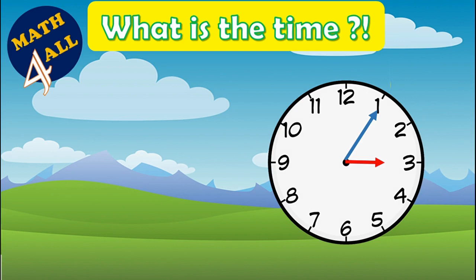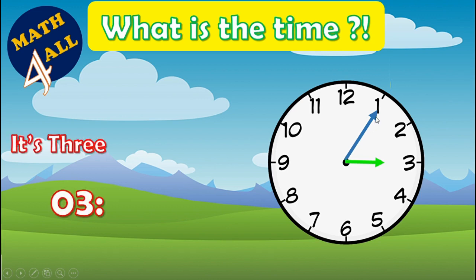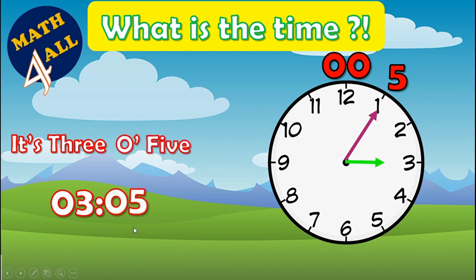What is the time? First look at the short hand — it's on three, so you write 'three.' Now look at the minutes hand and skip count by five on each number: zero, five. So you write three oh-five — you spell the zero as 'oh.' It's three oh-five.